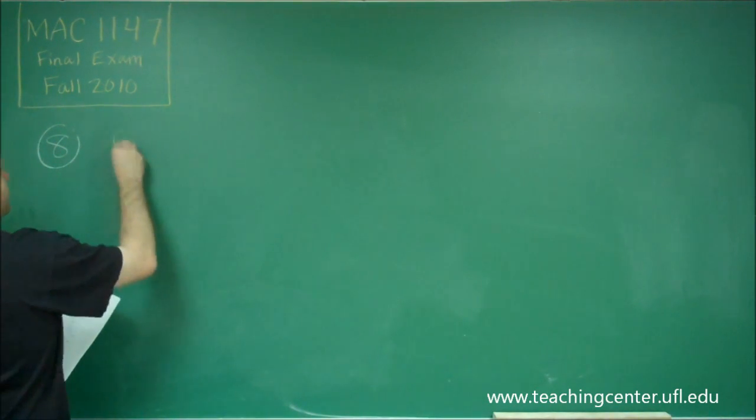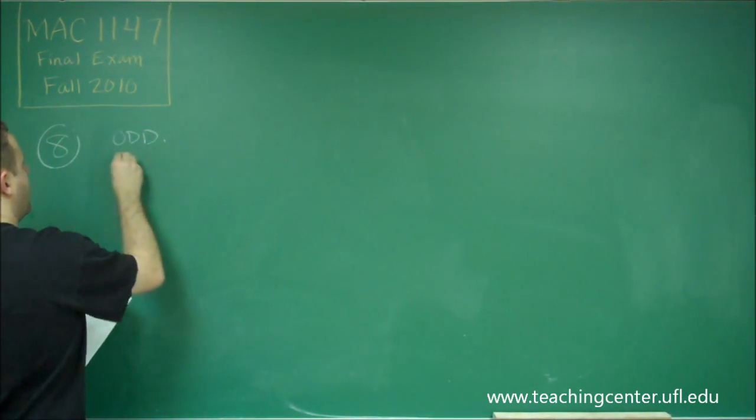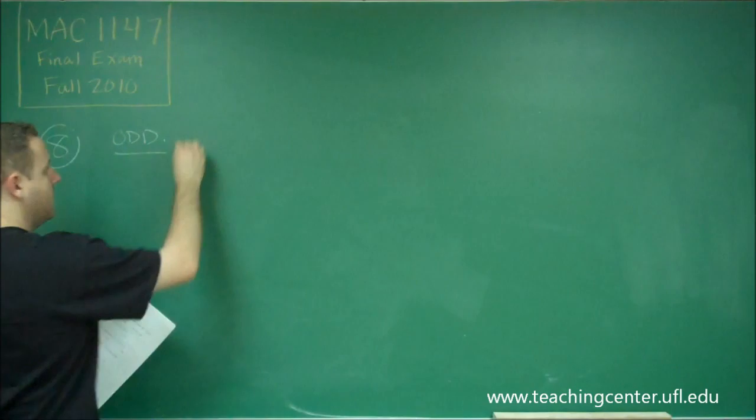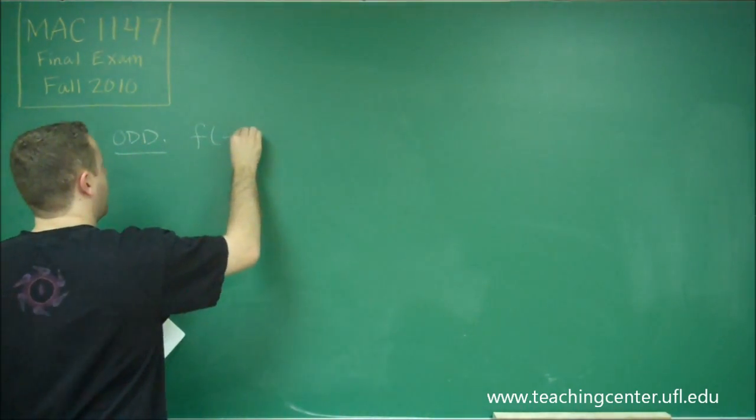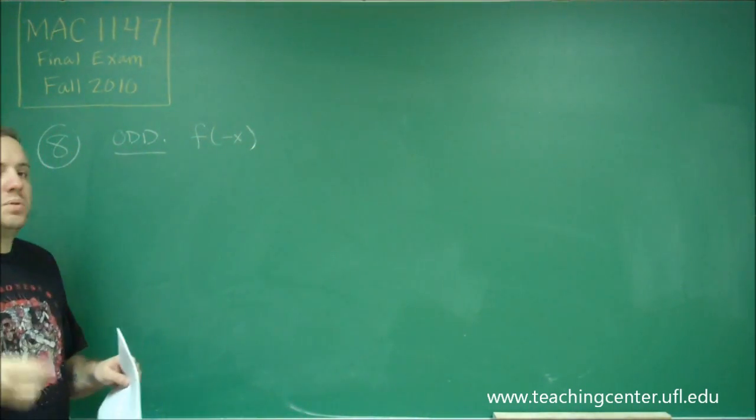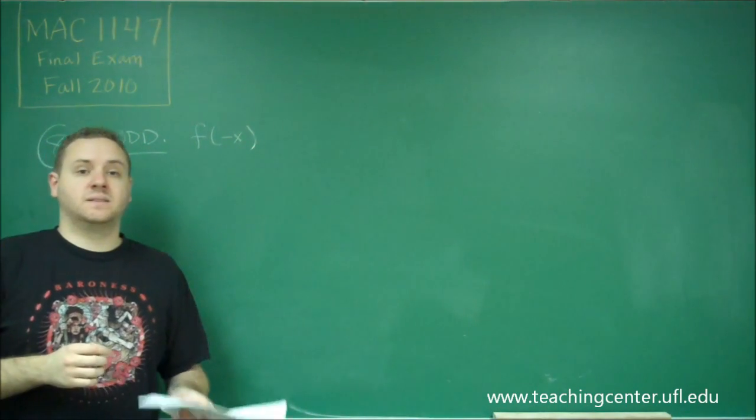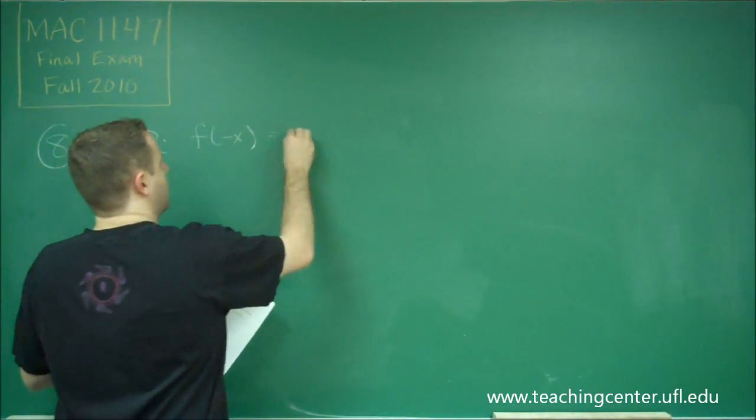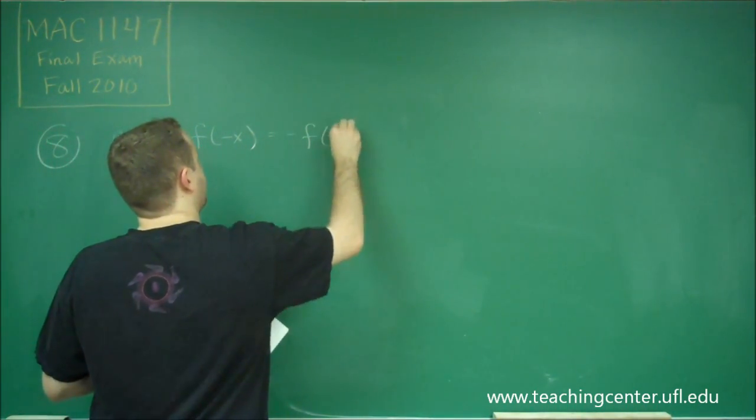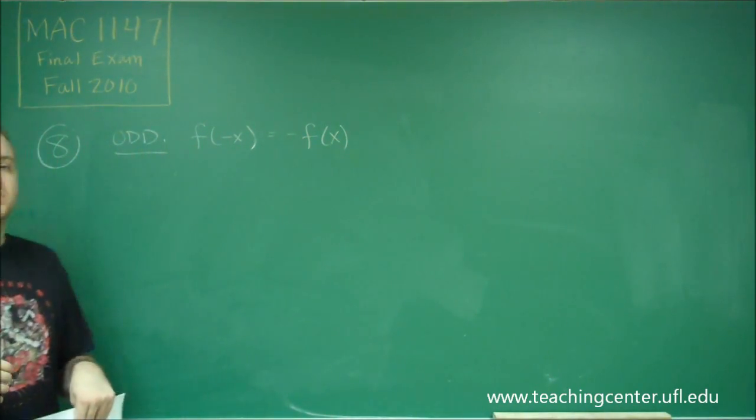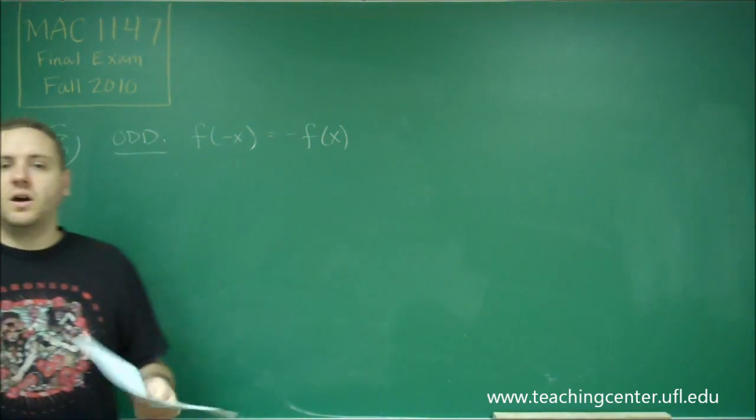But remember that an odd function, a function is odd if you know that f of negative x equals negative f of x, meaning if you plug in negative x instead of x in the function, you get the opposite of your original function. If that is true, then you have an odd function.